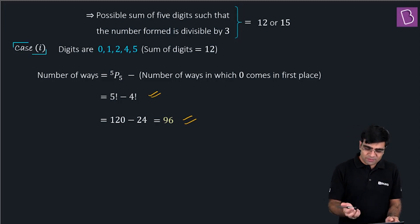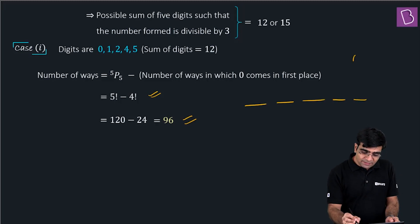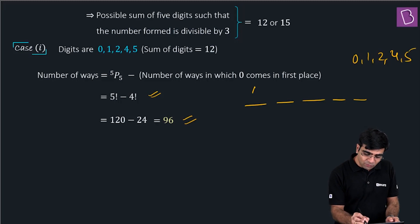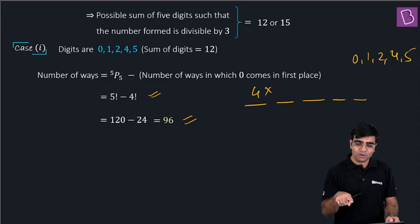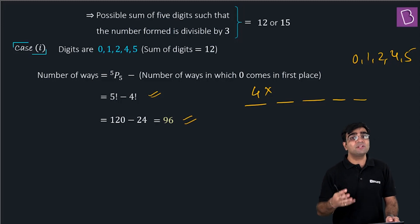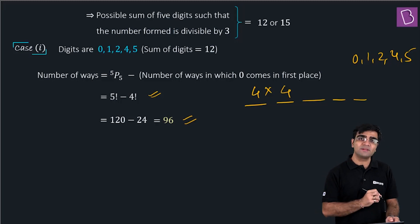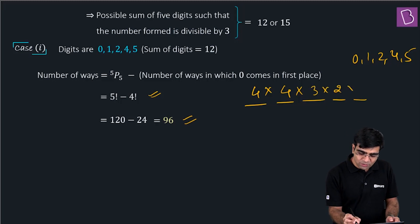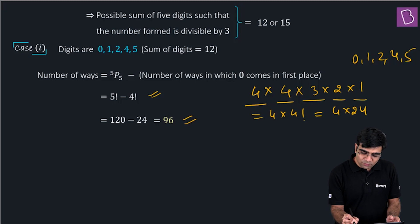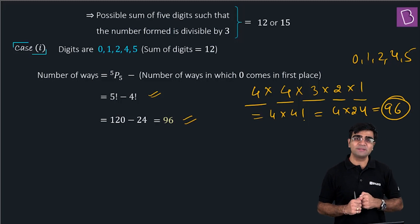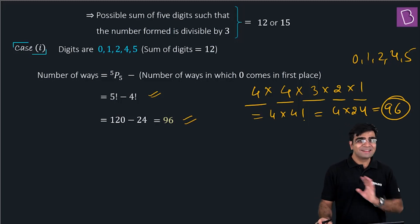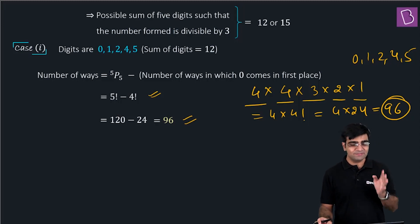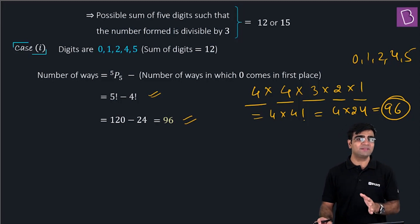There's another way to get the same answer. With digits {0, 1, 2, 4, 5}, the first place can be filled in 4 ways (any non-zero digit: 1, 2, 4, or 5). Once the first place is filled, the second place has 3 remaining non-zero digits plus 0 — again 4 choices. The remaining 3 places are filled in 3! = 6 ways. So total = 4 × 4! = 4 × 24 = 96. Same result.